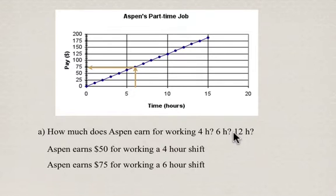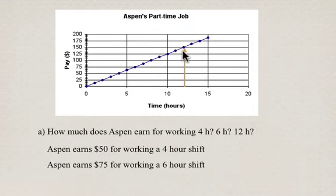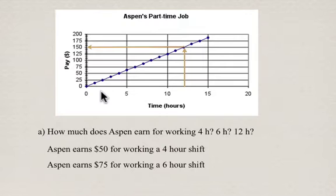In the last example, we want to know how much did she earn for working a 12-hour shift. We find 12, which is just a little bit less than halfway between 10 and 15, and draw a line straight up, go until we hit the graph, and then go across until we find out how much she earns — that's $150 for working a 12-hour shift.